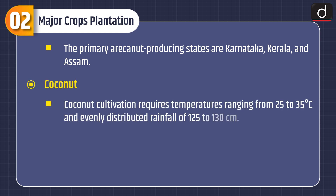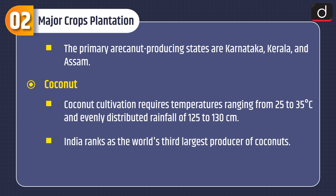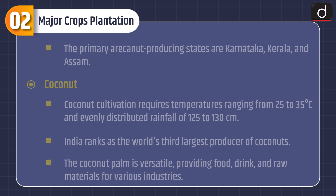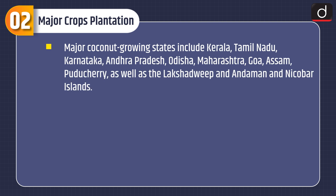Coconut: Coconut cultivation requires temperatures ranging from 25 to 35 degrees Celsius and evenly distributed rainfall of 125 to 130 cm. India ranks as the world's third-largest producer of coconuts. The coconut palm is versatile, providing food, drink and raw materials for various industries. Major coconut growing states include Kerala, Tamil Nadu, Karnataka, Andhra Pradesh, Odisha, Maharashtra, Goa, Assam, Puducherry, as well as the Lakshadweep and Andaman and Nicobar Islands.